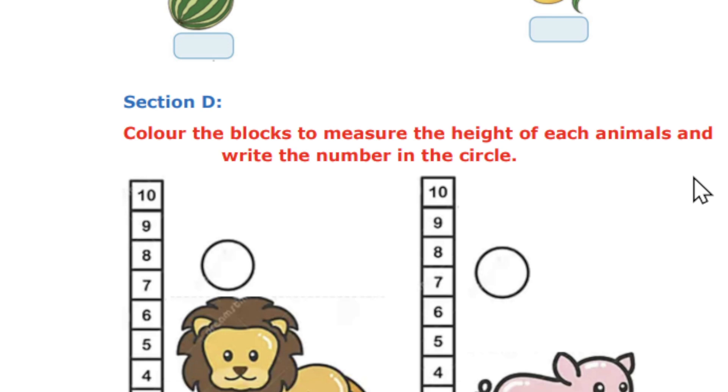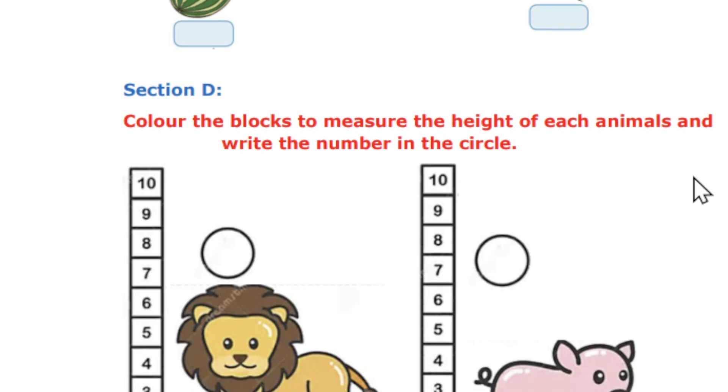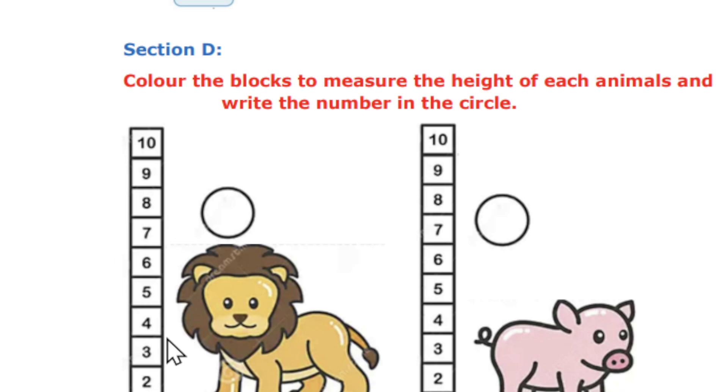So next one is Session D. So this is a very, very easier one. So you have to color the blocks to measure the height of each animals and write the number in the circle. You have to measure the blocks.